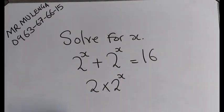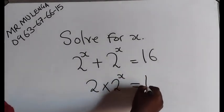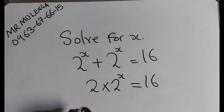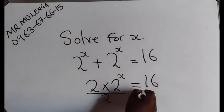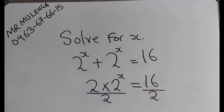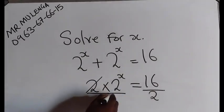So this one and this one are the same. Then this is equal to 16. From here, we are going to divide by 2. Even this side, we divide by 2, so that this 2 and this 2 cancel.